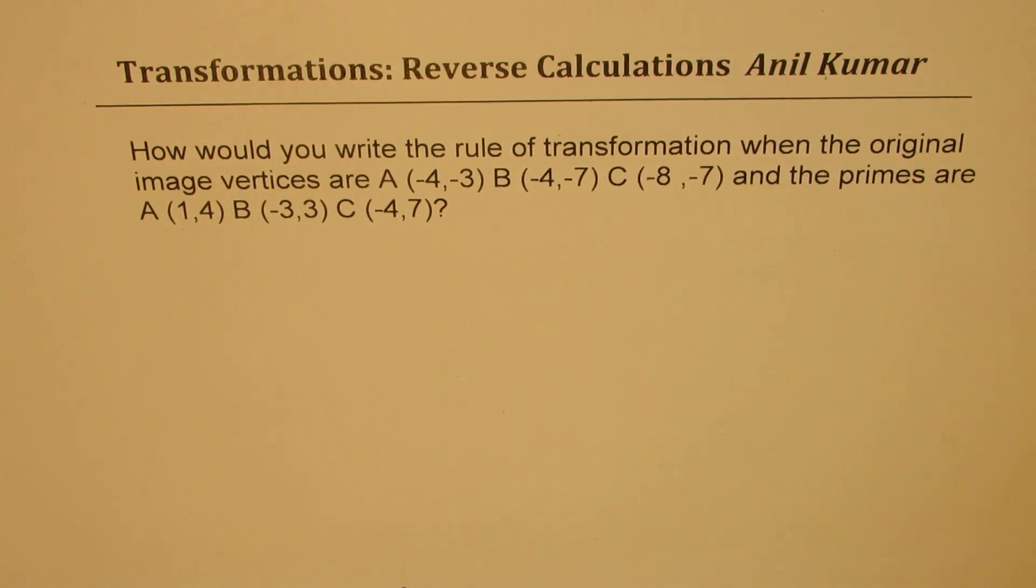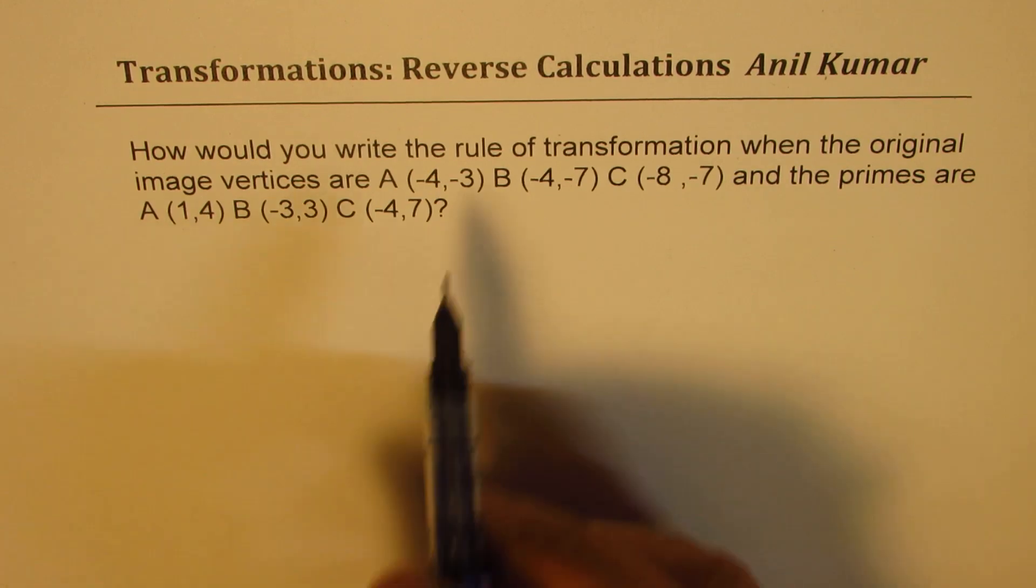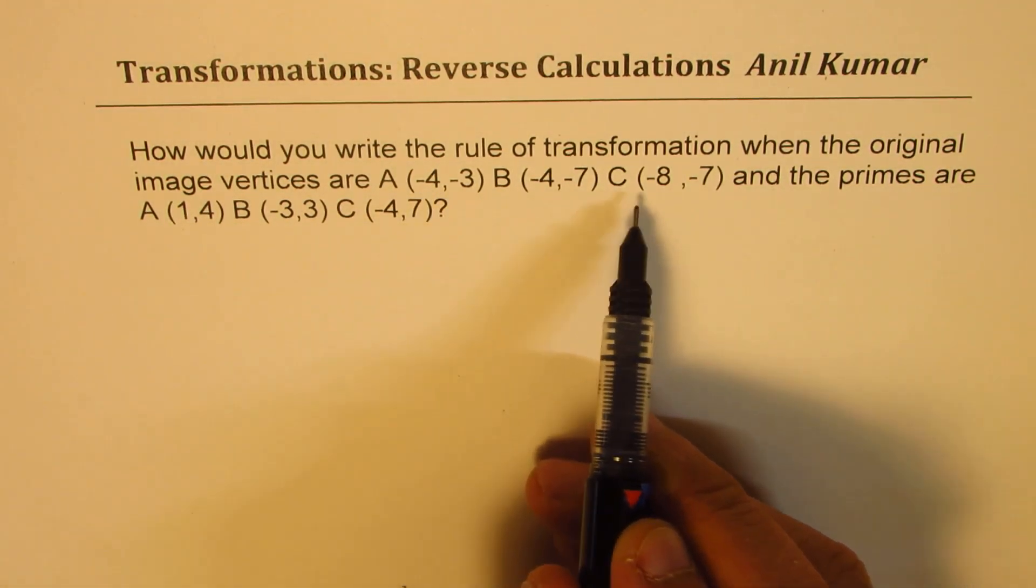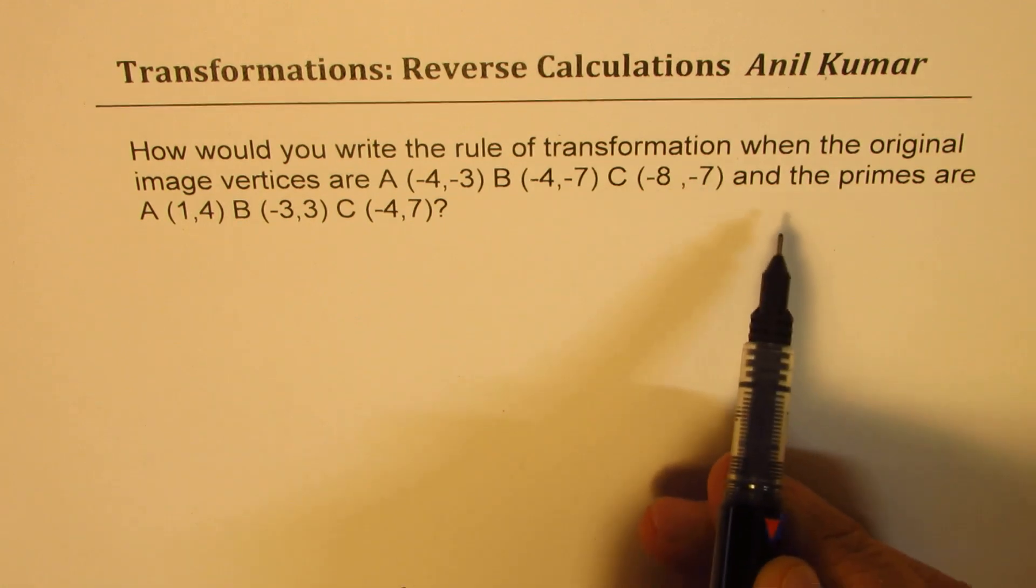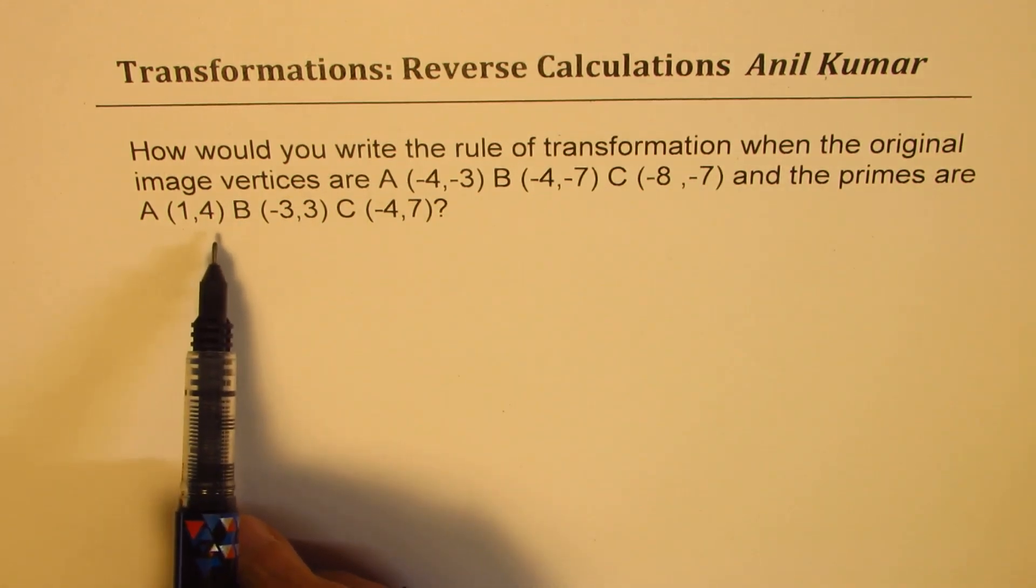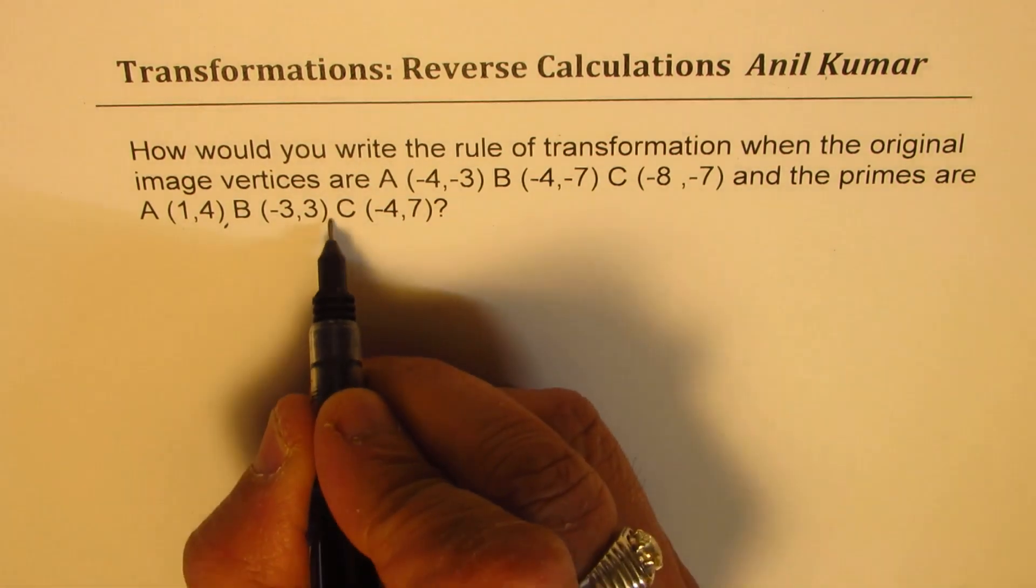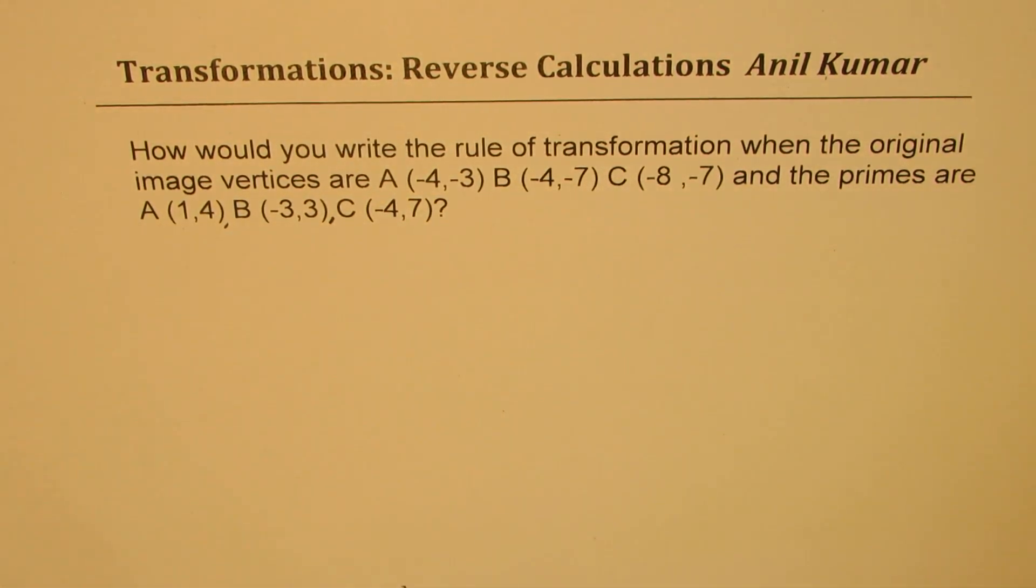the original image vertices are A(-4, -3), B(-4, -7), C(-8, -7), and the primes are A'(1, 4), B'(-3, 3), and C'(-4, 7)?